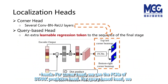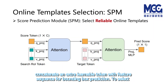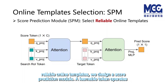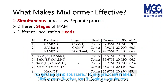For the corner head, we use the FCN from the Stark prediction head. For the query-based head, we concatenate an extra learnable token with the feature sequence for bounding box prediction. To select reliable online templates, we design a score prediction module: a learnable token operates attention with the search feature and template feature successively, and an MLP layer processes the token output to get the template score.